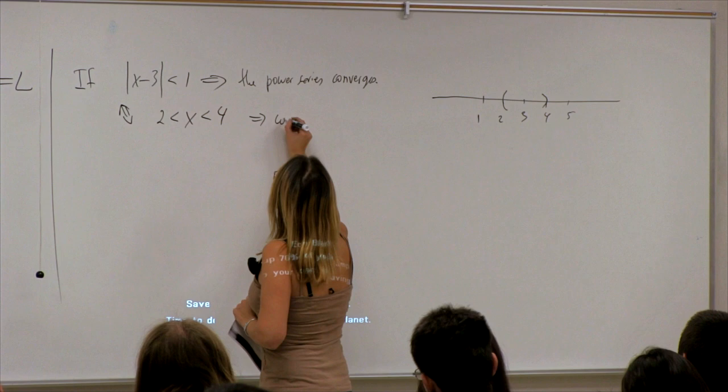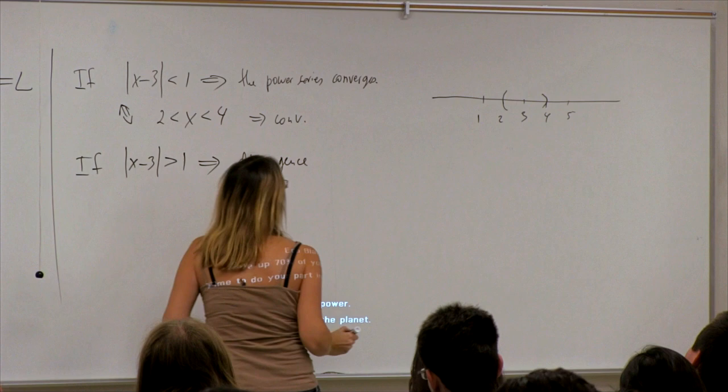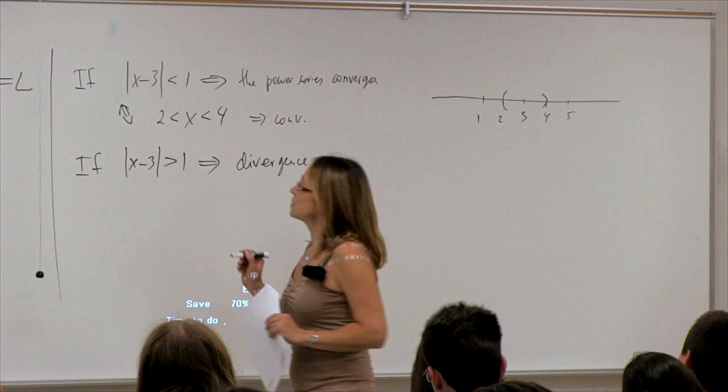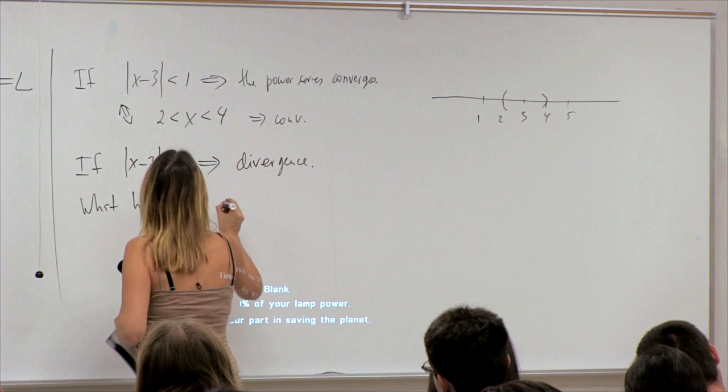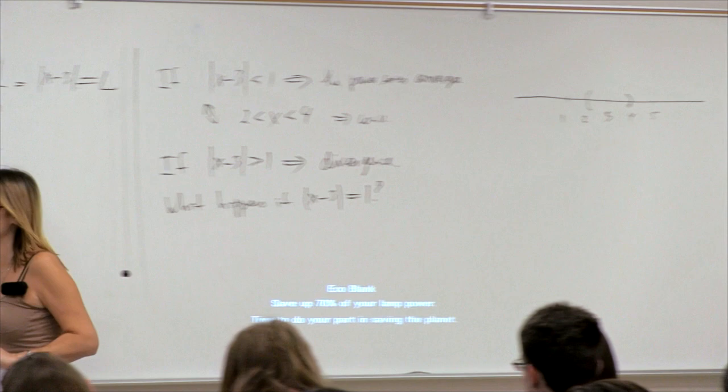If |x−3| is greater than 1, we have divergence. The only remaining question is what happens when |x−3| equals 1 — this is where the ratio test is powerless. We have to check it in a different way.